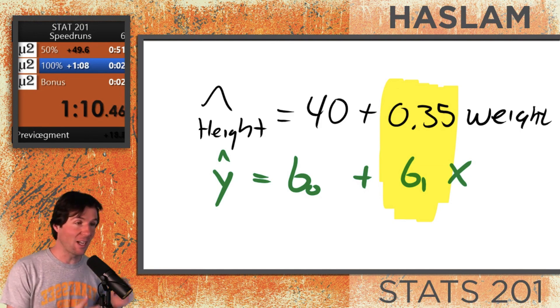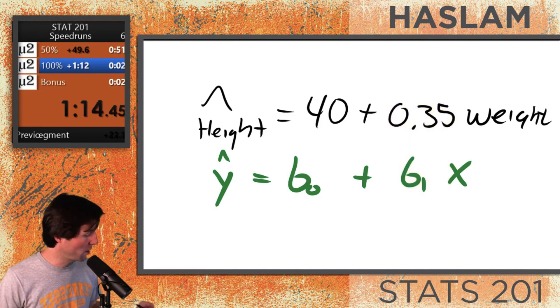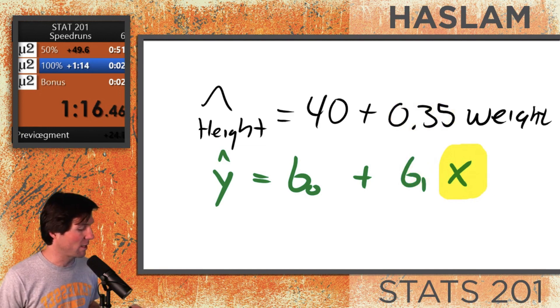Now if you notice, I didn't give it the context yet, but I'm telling you, for each, and let's highlight as we do it, for each one unit increase in x, we expect y to increase by B1.